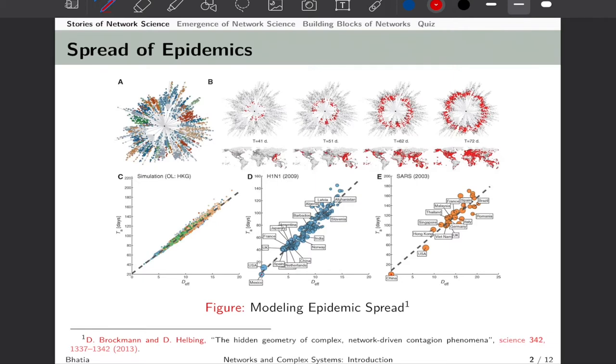Secondly, we are going through the COVID-19 phase. The spread of epidemics has been a concern for scientists of different disciplines. One study looked at the spread of H1N1 in 2009 and SARS in 2003. They used networks of interactions among countries to map where patient zero could be—the person who first contacted the disease and spread it to the rest of the world. For more details, refer to the paper on hidden geometry of complex network-driven contagion phenomena.